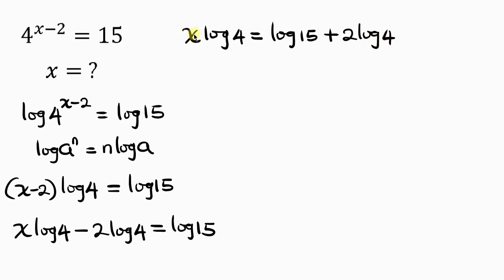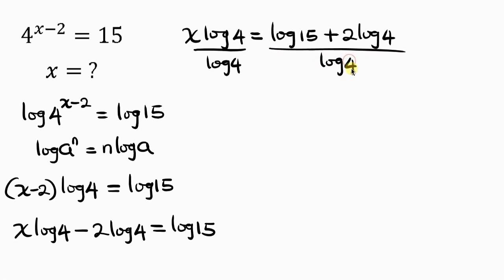Since we're looking for x, our next step will be to divide both sides by log 4. Log 4 cancels log 4 on the left, leaving x equal to (log 15 + 2·log 4) / log 4.